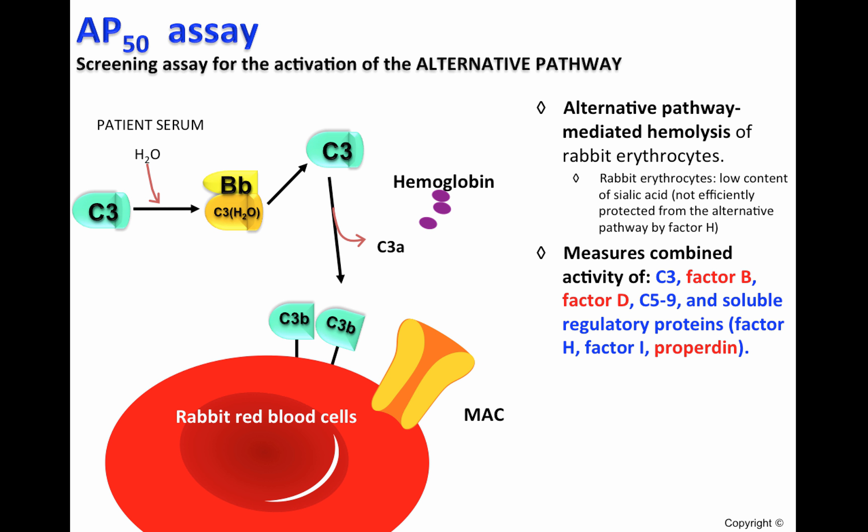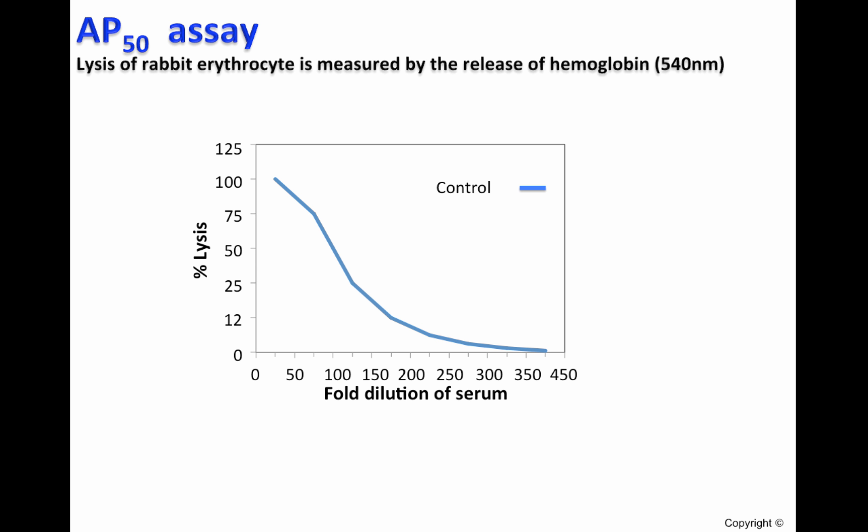If one or more components of the alternative pathway are decreased, the AP50 will be decreased. A fixed volume of rabbit erythrocytes is added to each serum dilution. After incubation, the mixture is centrifuged and the degree of hemolysis is quantified by measuring the absorbance of the hemoglobin released into the supernatant at 540 nanometers. With this control serum, 50% lysis is obtained when the serum is diluted 100 times.